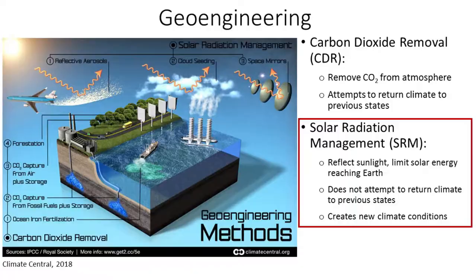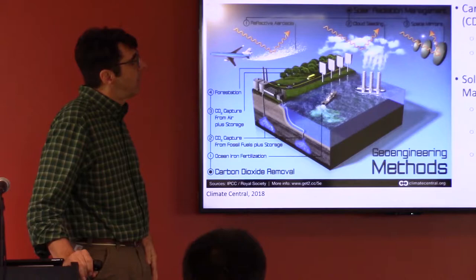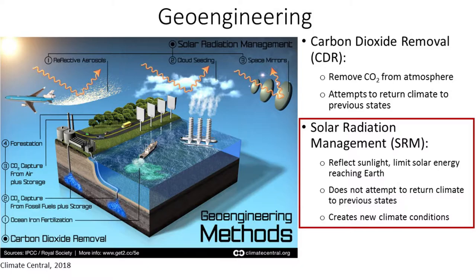I want to clear up what geoengineering is, because there's oftentimes a lot of technologies described as geoengineering. At the fundamental level, there are two categories: carbon dioxide removal — removing CO2 from the atmosphere with the goal of returning the climate to its previous states, through carbon sequestration either biologically or technologically, storing it in the earth in the form of soil or geological storage.